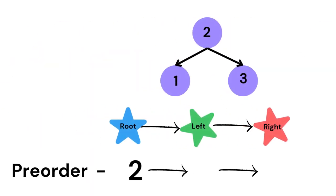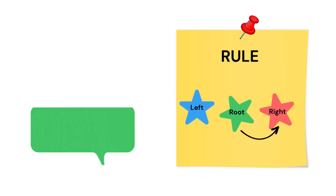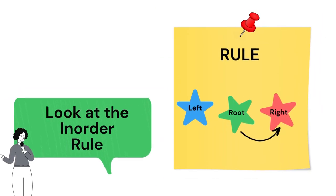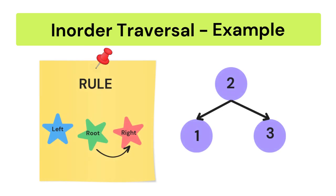In pre-order, the root will always come first. Let us look at the in-order rule. In in-order, we have to traverse first the left subtree, then the root node, then the right subtree. In-order traversal will always give us an ascending order format of traversal.